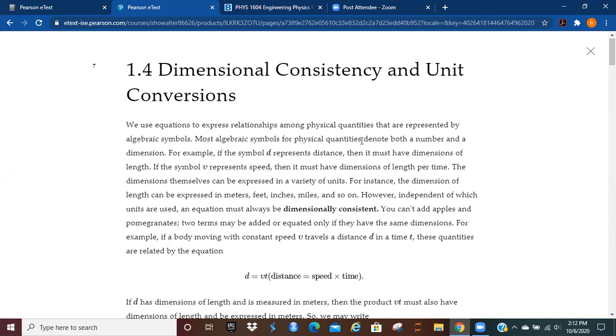Most algebraic symbols for physical quantities denote both a number as well as a dimension. And the dimension just simply refers to whether you're dealing with mass, whether you're dealing with length, time, that kind of thing. So if the symbol D, for instance, represents distance, then it must have dimensions of length. If you're going to represent distance, you can't do it with seconds.